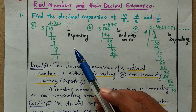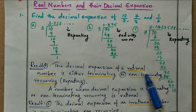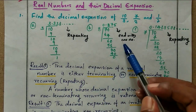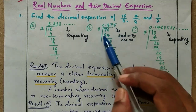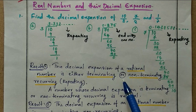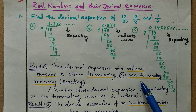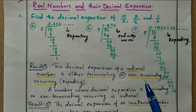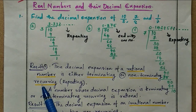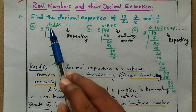We have two choices in the decimal expansion of a rational number. The decimal expansion of a rational number is either terminating — meaning it ends with one number, as in the second case — or the second choice is non-terminating recurring, meaning it does not end with one number and is repeating.